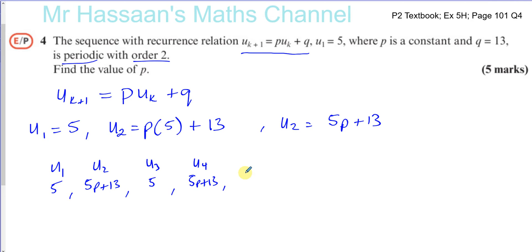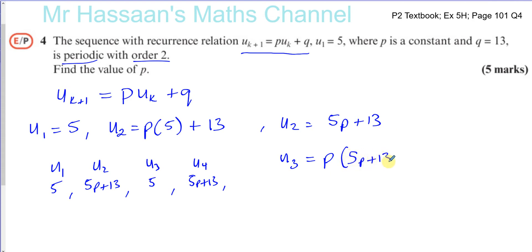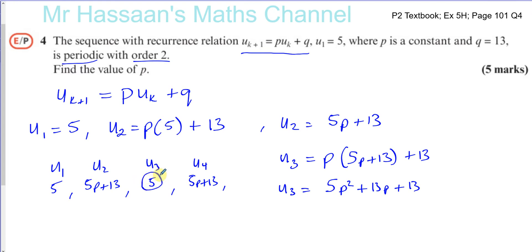To find the value of P, I'm going to express the third term in terms of the second term. We know U2 = 5P + 13, and U3 = P·U2 + Q = P(5P + 13) + 13. Expanding that gives U3 = 5P² + 13P + 13. We also know the third term equals 5, so these two must equal each other.